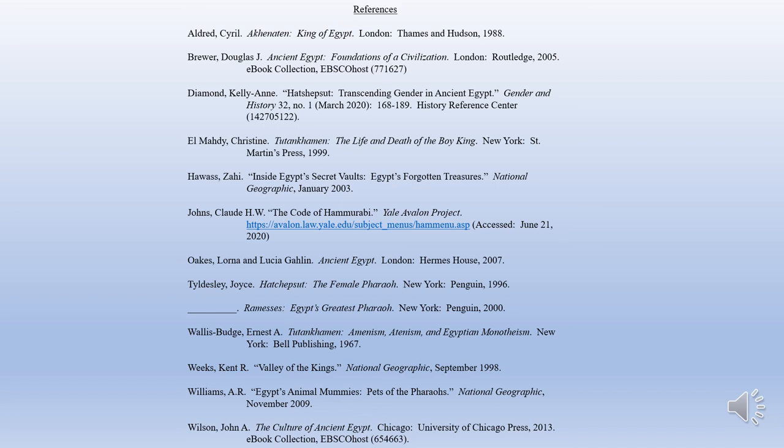The Oaks book has two authors: last name comma first name, and the second author. If you have three or more authors, you would do last name comma first name et al., which means and others. The book title is Ancient Egypt, published in London by Hermes House, 2007. Notice there's an entry and one below it with a line — that means both sources were written by Joyce Tildesley. Hatshepsut: The Female Pharaoh was published in New York by Penguin in 1996. That line tells you the book Ramses: Egypt's Greatest Pharaoh was also written by Joyce Tildesley, published by Penguin in New York in 2000. There is a reason why this information is there — it tells the reader about the book.